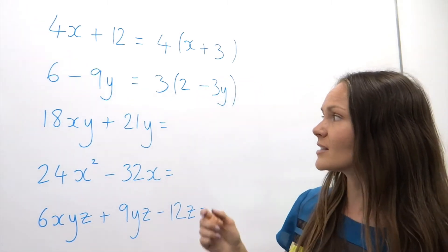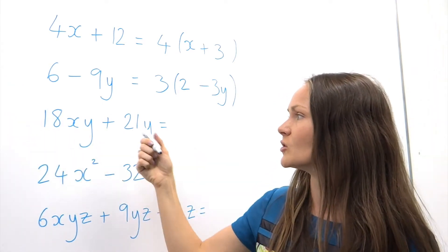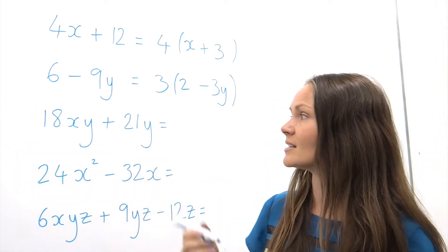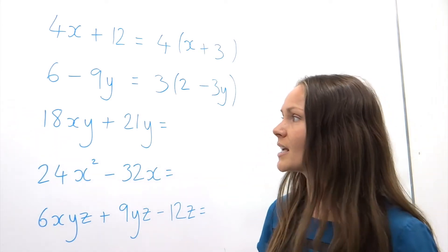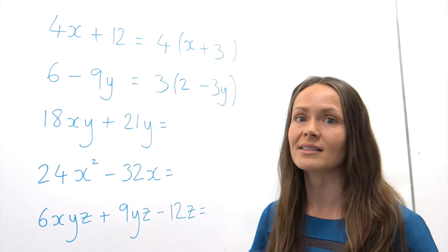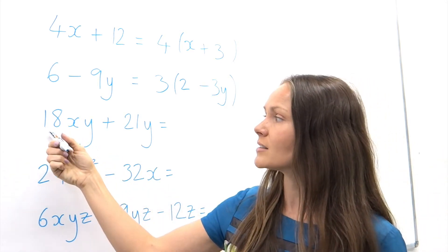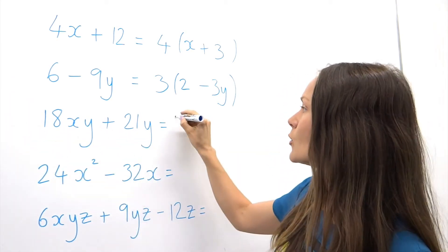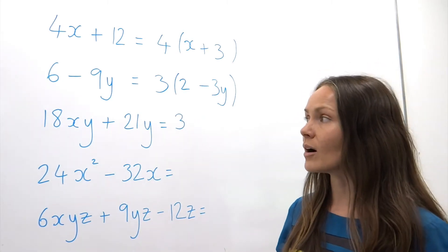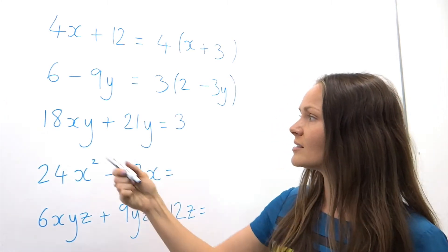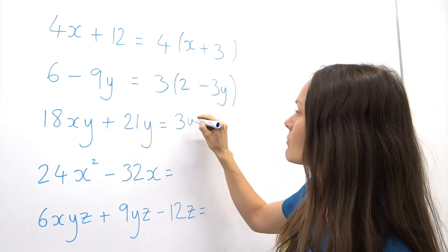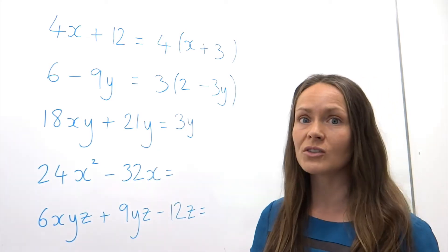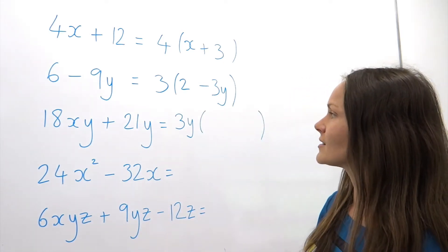Now example number 3. What's the highest common factor in 18 and 21? I say to my students: what times table do you recognize these numbers from? I recognize them from the three times table, and 3 is actually the highest common factor here — the biggest number that fits exactly into both 18 and 21. In this one, there's also a letter that's common: there's a y in both terms, so you need to write that down too and take out everything that's common.